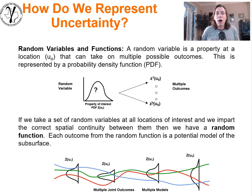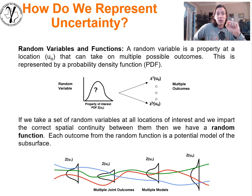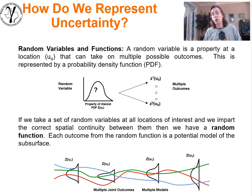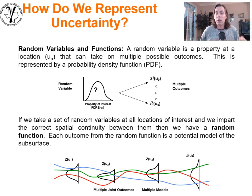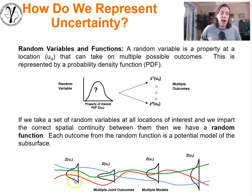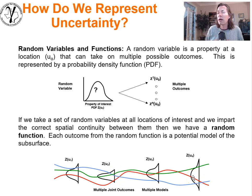Of course, it's important to be able to estimate at a specific location in space, but for the purpose of most of our transfer functions and calculations in the subsurface, we need more than just one. We need an exhaustive or comprehensive set of locations and variables sampled in space, so we need to work with multiple random variables — each with multiple possible outcomes, represented by their local PDFs at different locations.